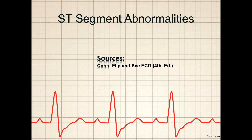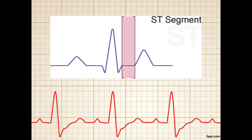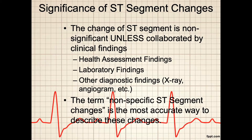Recall what the ST segment is and that normally, between the QRS complex and the T wave, the rhythm strip should return to the isoelectric line. Further, recall that this ST segment represents the beginning part of ventricular repolarization. Any abnormalities in this segment may reflect changes in the ventricles caused by disease, chemical imbalances, or other problems. However, in isolation, ST segments have no clinical significance.